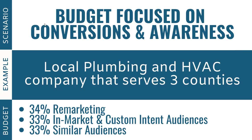Scenario two: a budget focused on both conversions and awareness. My example is a local plumbing and HVAC company that serves three counties. Getting awareness helps because there will come a time when someone needs plumbing or air conditioning services, and if you're top of mind, they'll call you first. If they've seen your advertisement before and then do a quick Google search and see you at the top, they remember seeing your ads. I would recommend splitting your budget: 34% remarketing, 33% in-market and custom intent audiences, and 33% similar audiences.